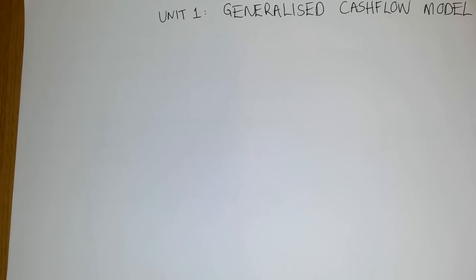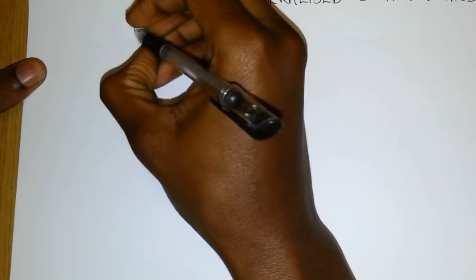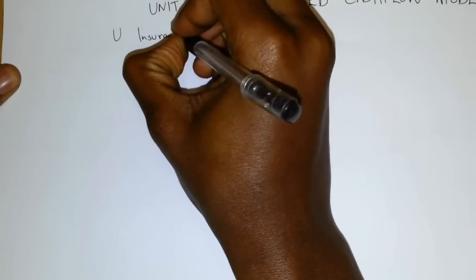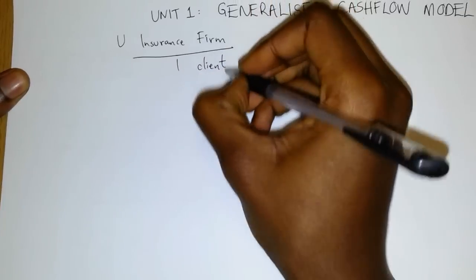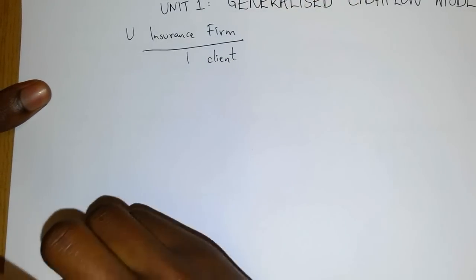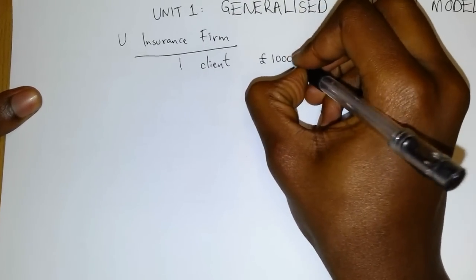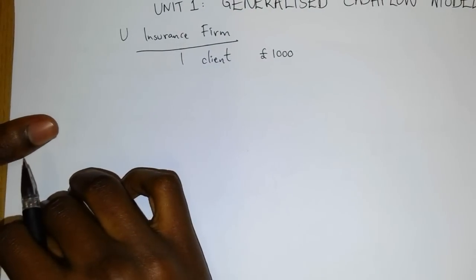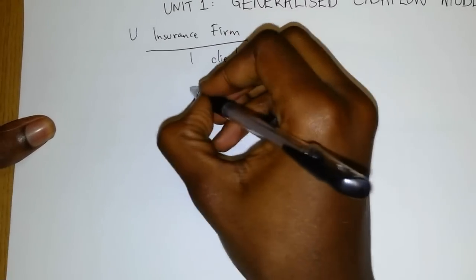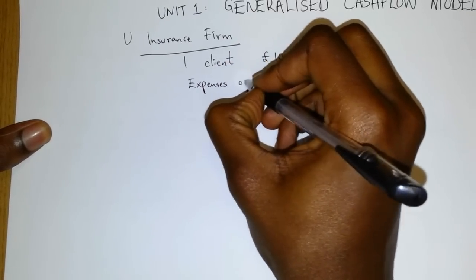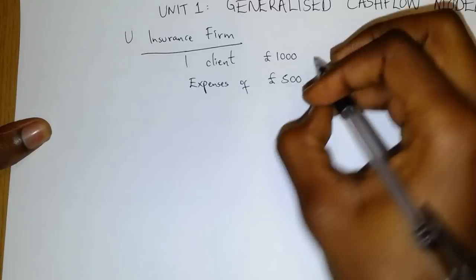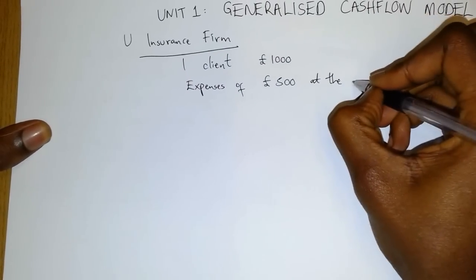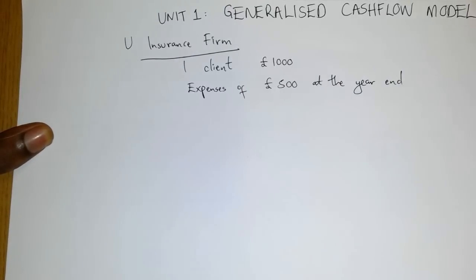I'll give you an example to reinforce this idea. Our example is going to be that of an insurance firm. Let us assume that this insurance firm has one client who pays a yearly premium of a thousand pounds, and let us further assume that this insurance company has to pay expenses of five hundred pounds at the end of the year.